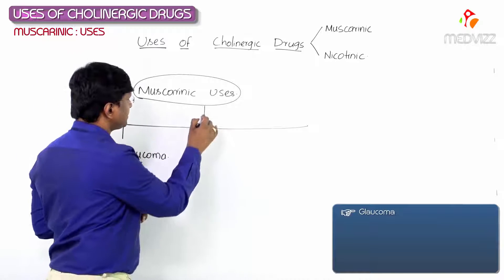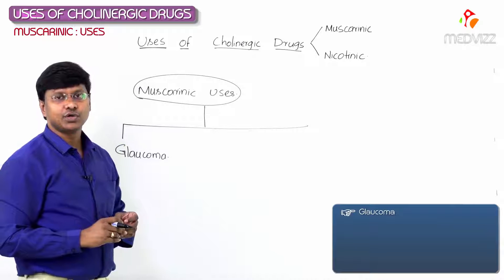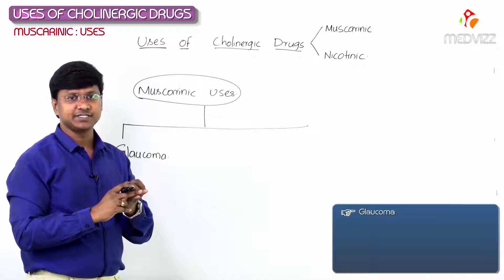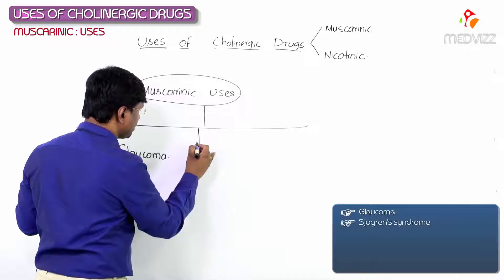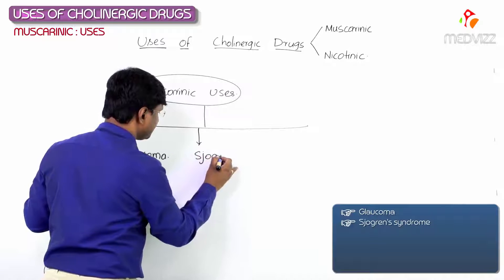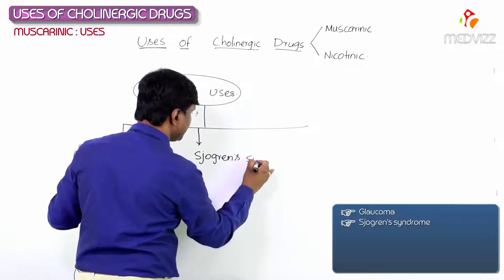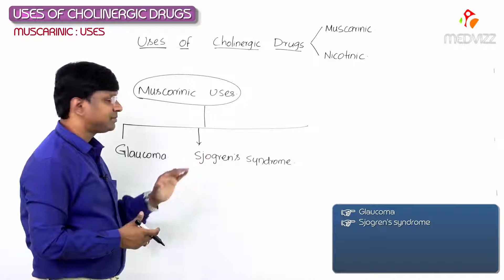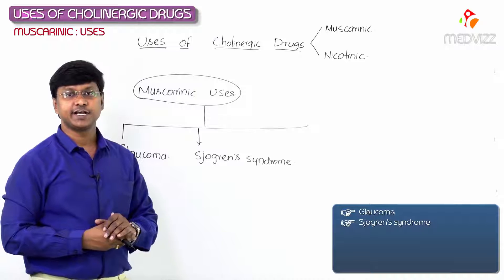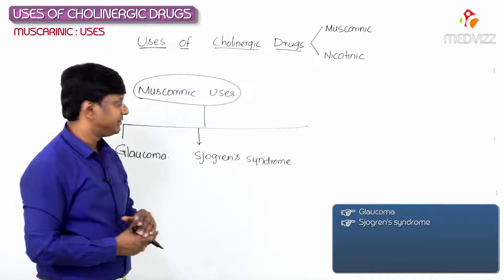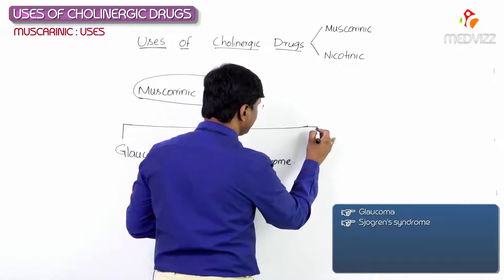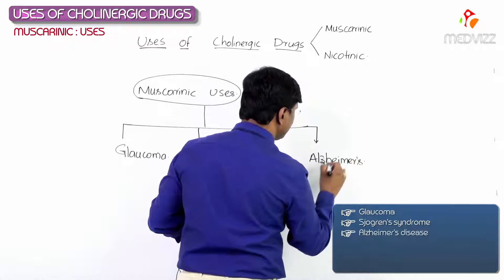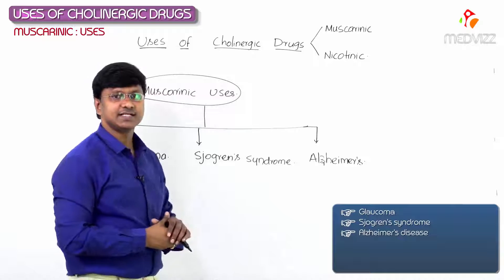The next muscarinic use: these cholinergic drugs increase salivary secretion and lacrimal secretion, so they are used in the treatment of Sjögren's syndrome. Next, for the clinical condition characterized by dementia in elderly individuals — that is Alzheimer's disease — these cholinergic drugs are used by their muscarinic action.